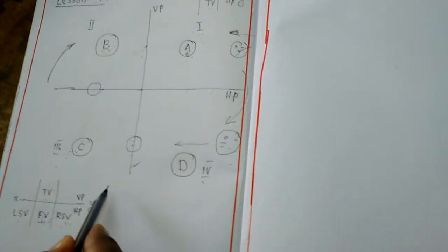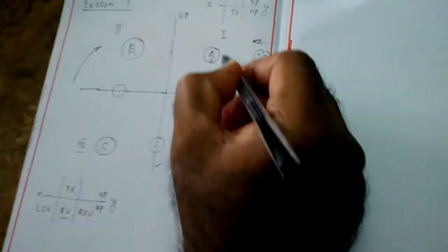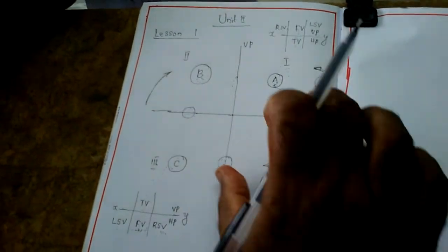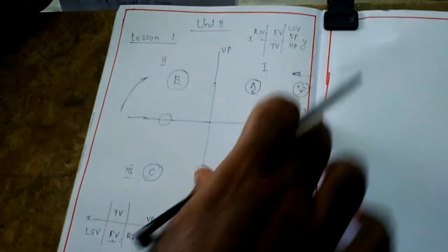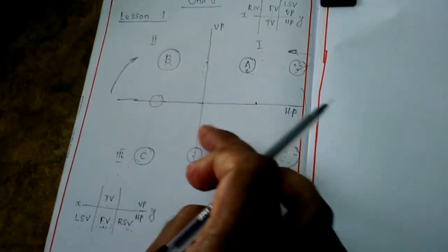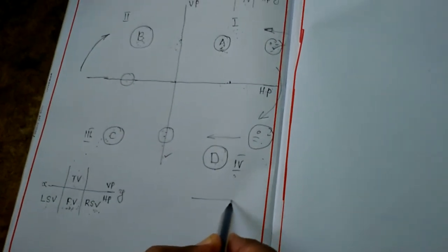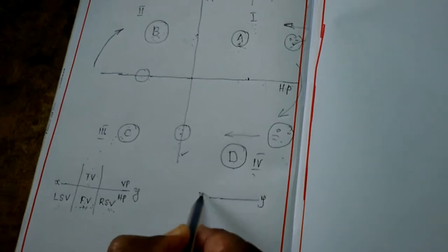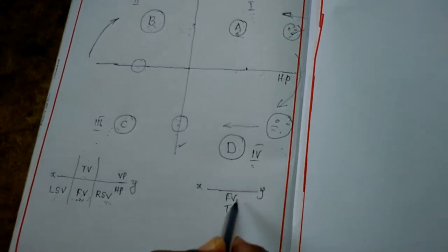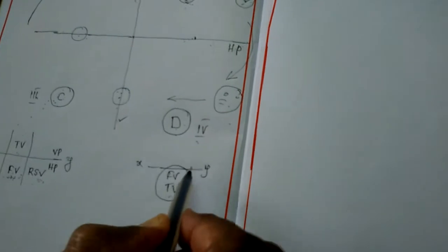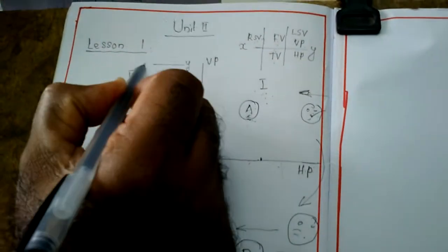In fourth angle projection, this shadow or view appears as the front view. Whenever you see from the top — that is, downward direction — you get the top view here because this is a transparent plane. But due to the rotation of the axis, this part coincides with the other, and automatically the top view and front view both occupy below the XY line only. Sometimes both coincide each other as well. That's why we should not use the fourth angle projection method in general practice.